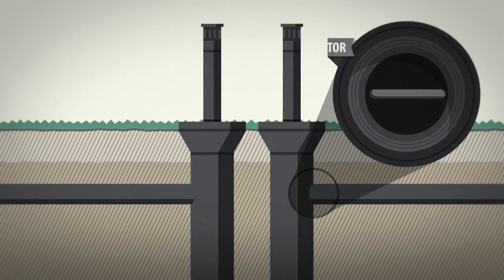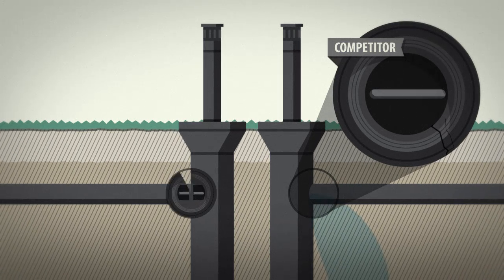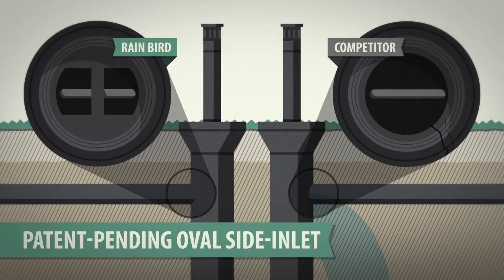Competitive 6-inch and 12-inch models use a circular inlet design that's prone to leaks, but Rain Bird uses a patent-pending oval side inlet design for increased durability.